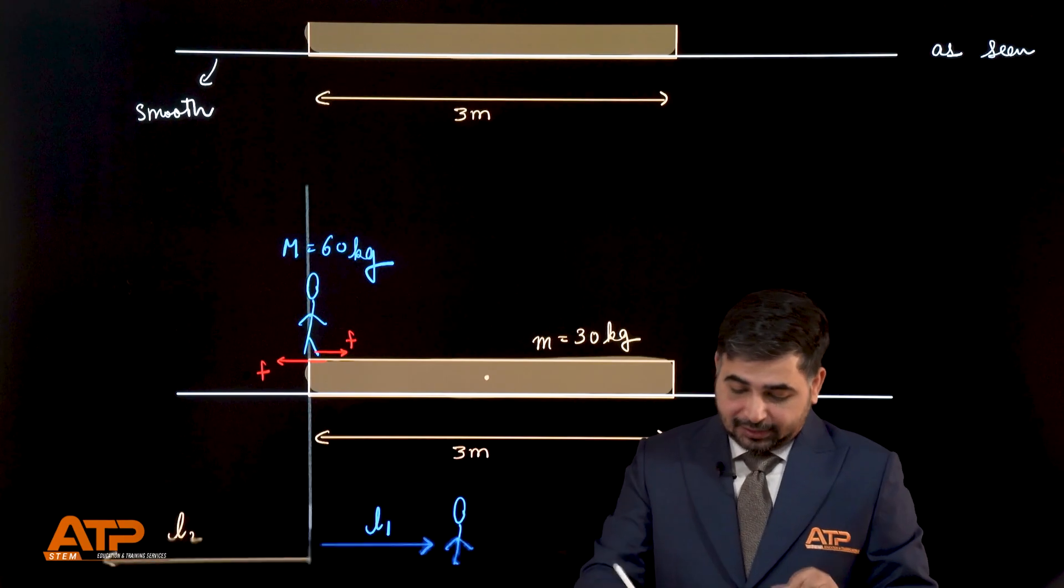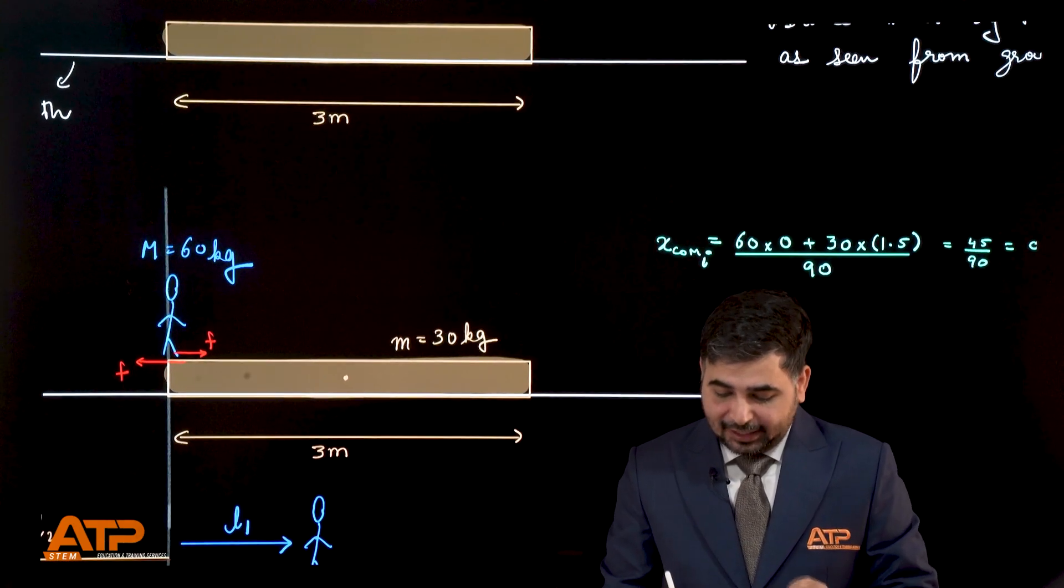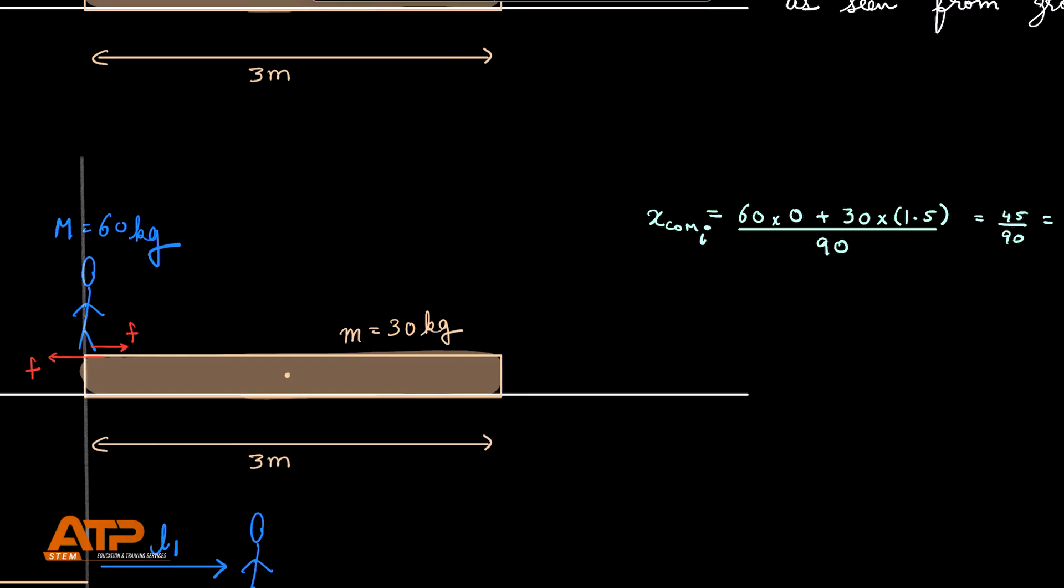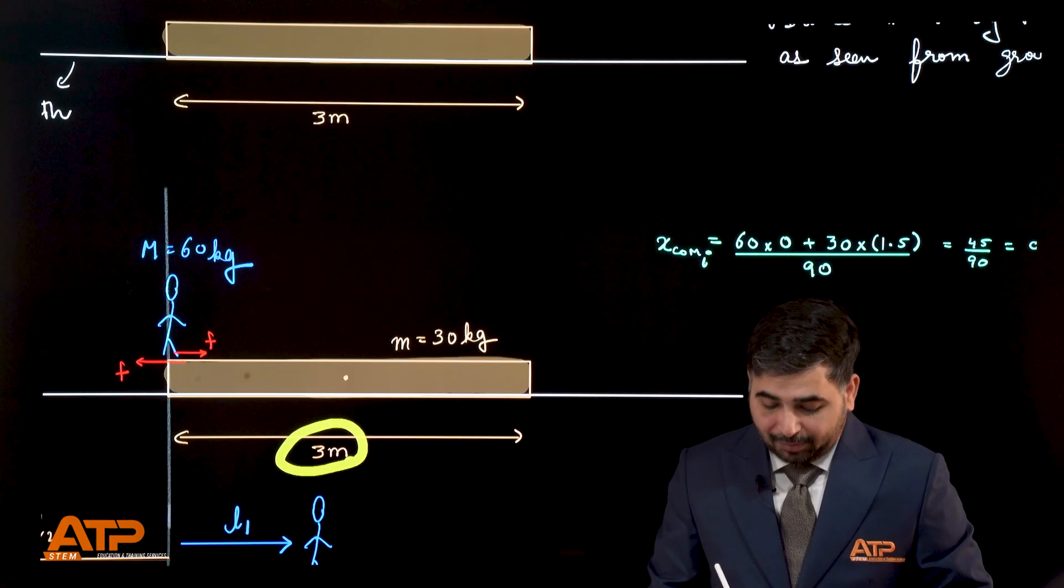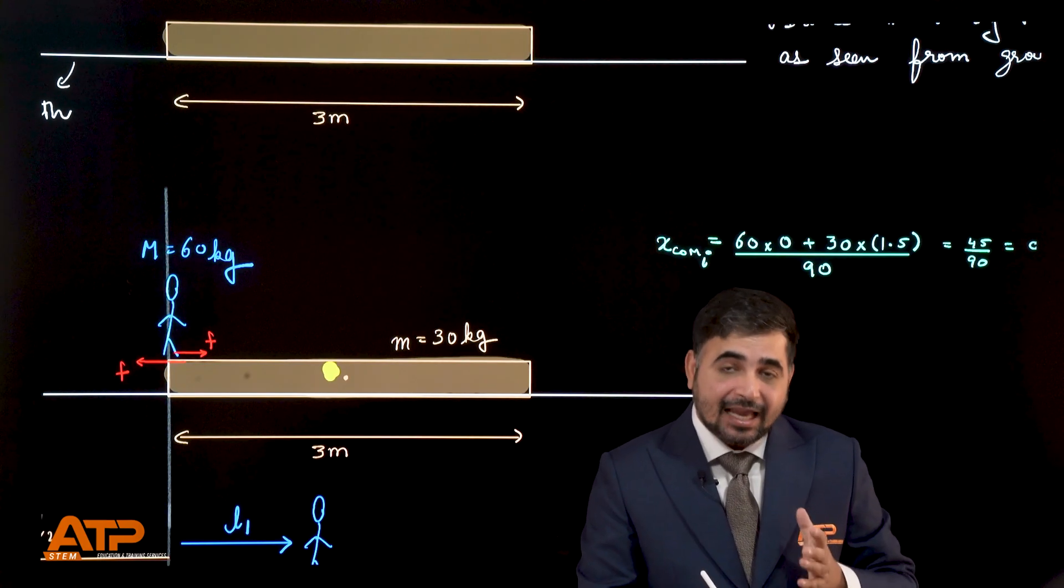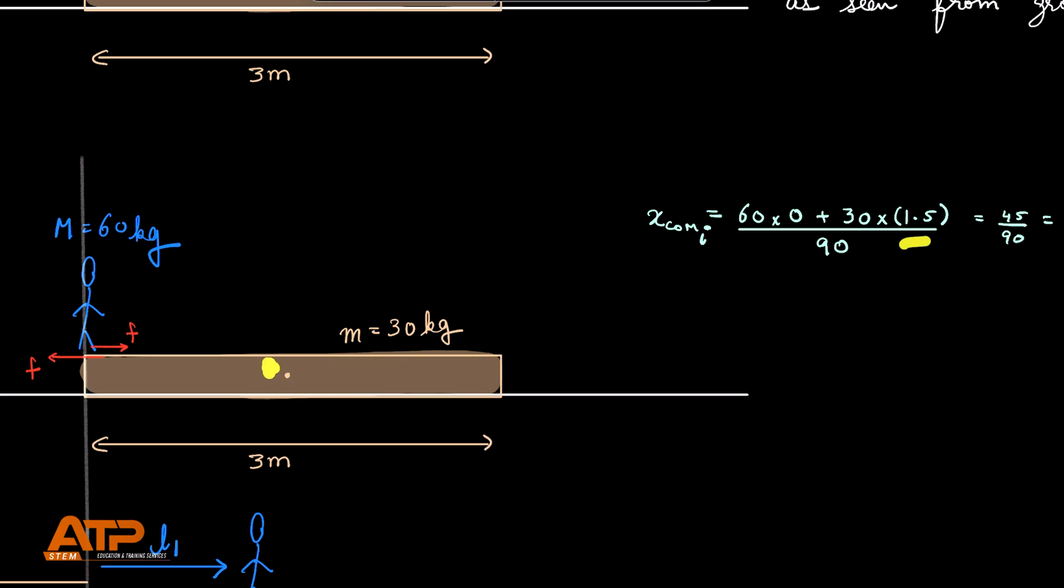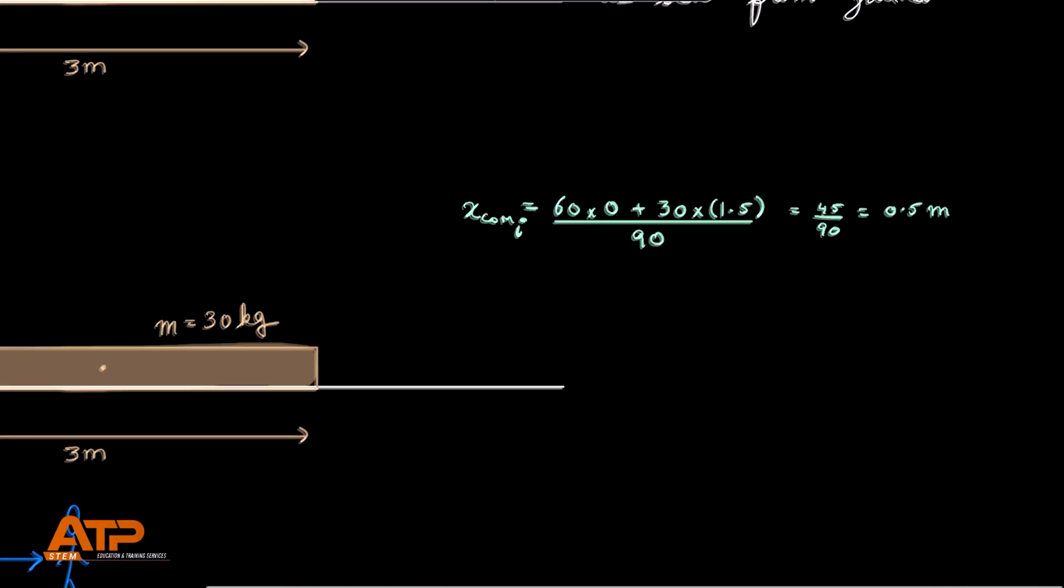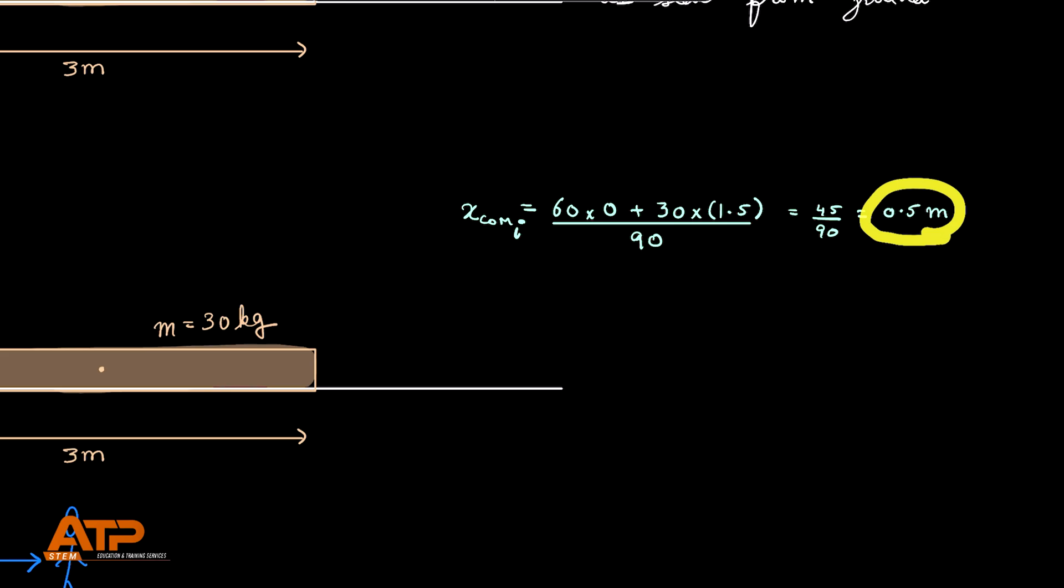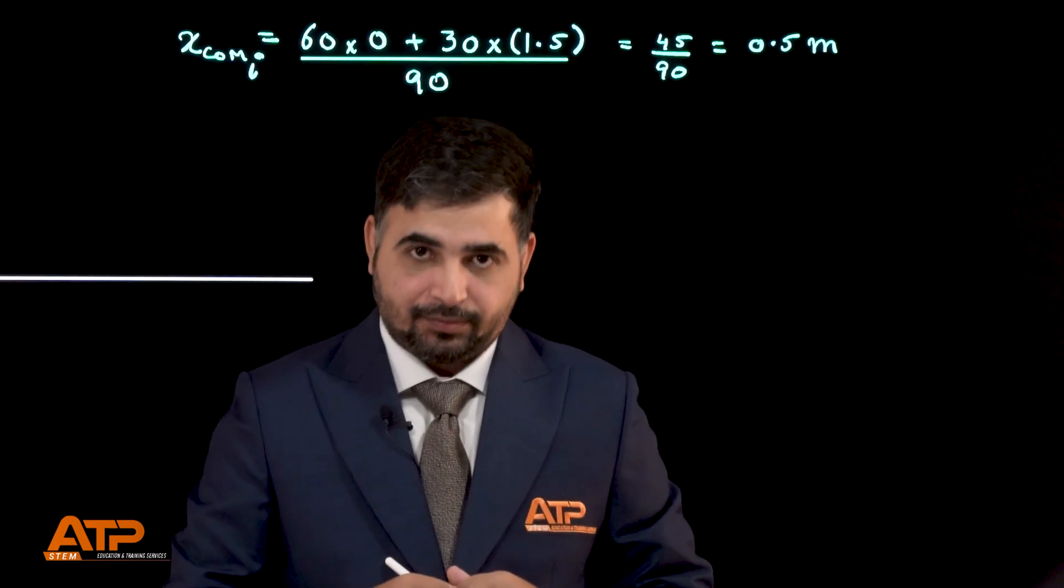To find center of mass, equation is going to be 60 into 0. Why 0? We are assuming that origin is here. So 60 multiplied by 0 plus 30 into 1.5. Why 1.5? The plank's 3 meter long but the center of mass of the plank itself is going to be in the middle. That's why 1.5 divided by total mass 90, this will give you 0.5 meters as the answer.